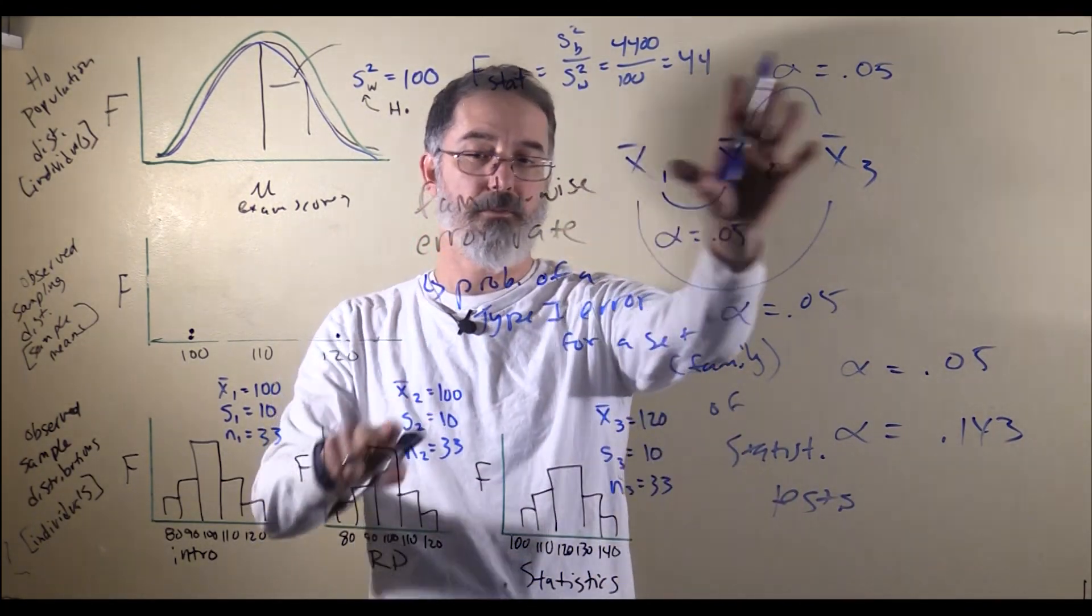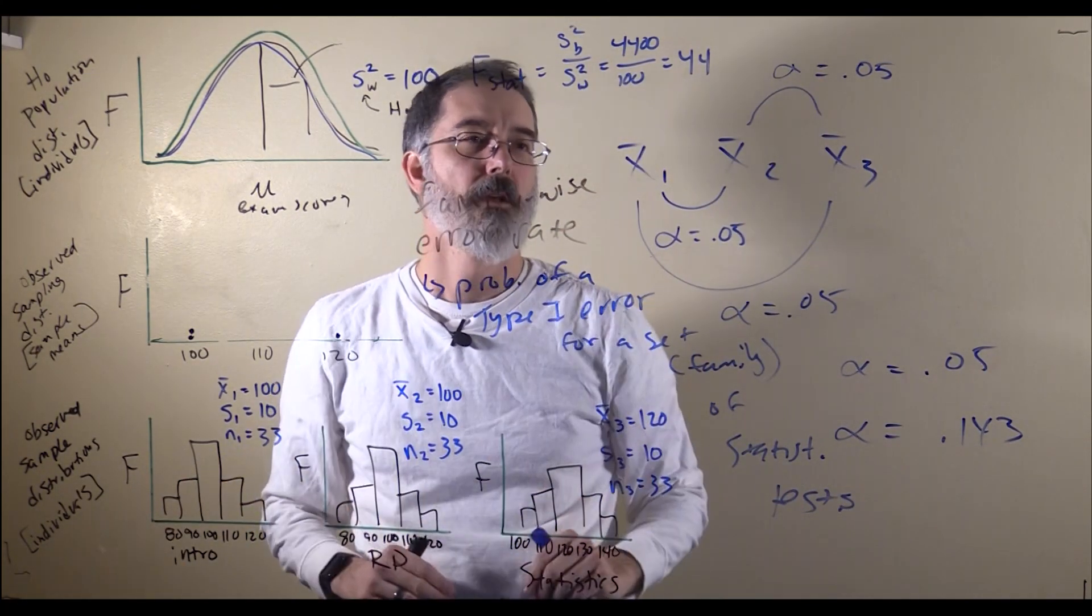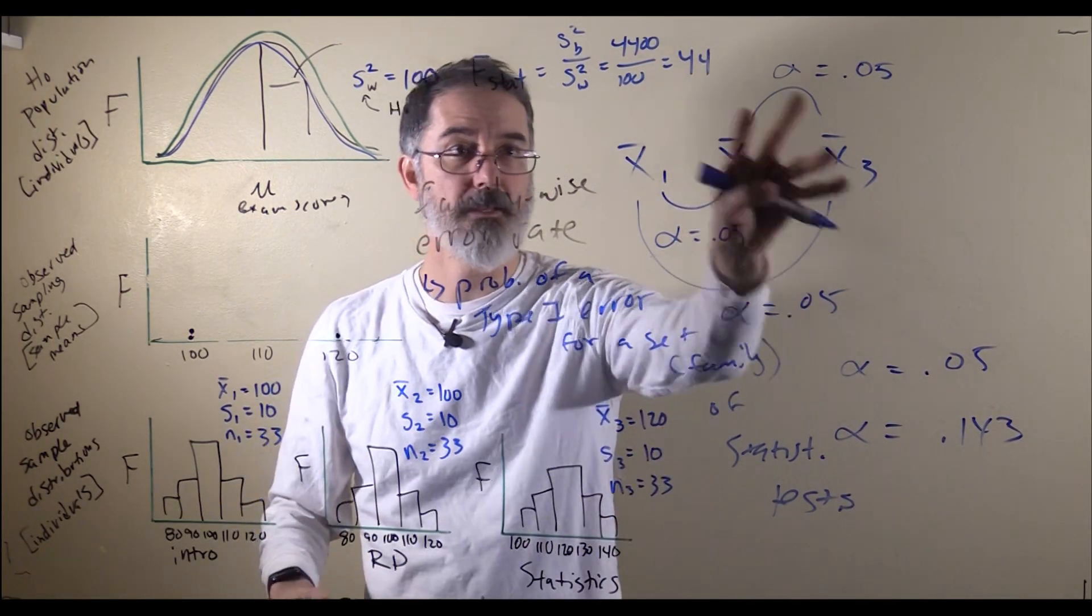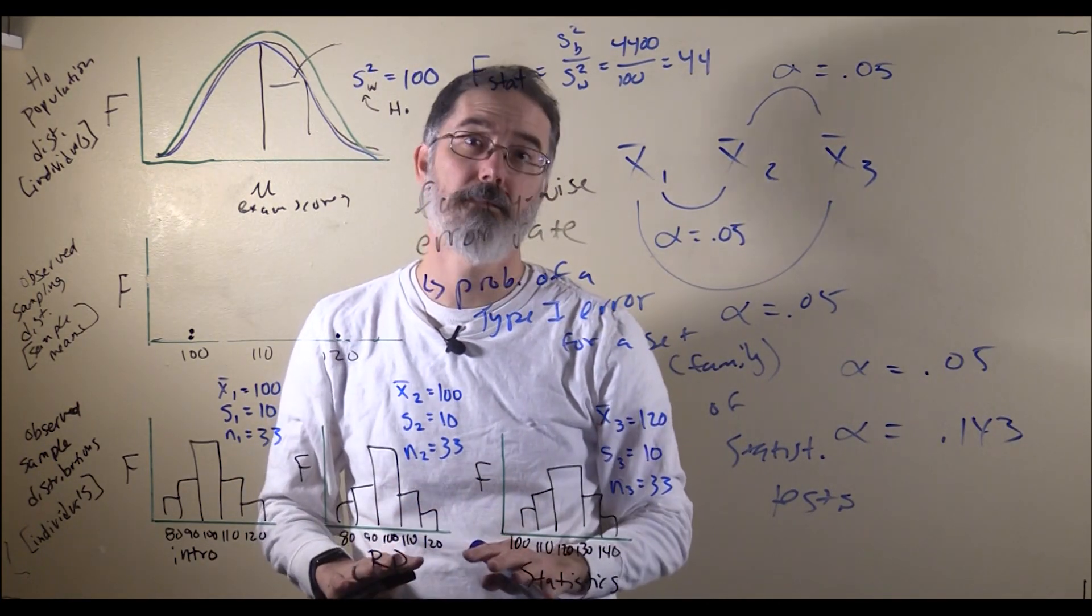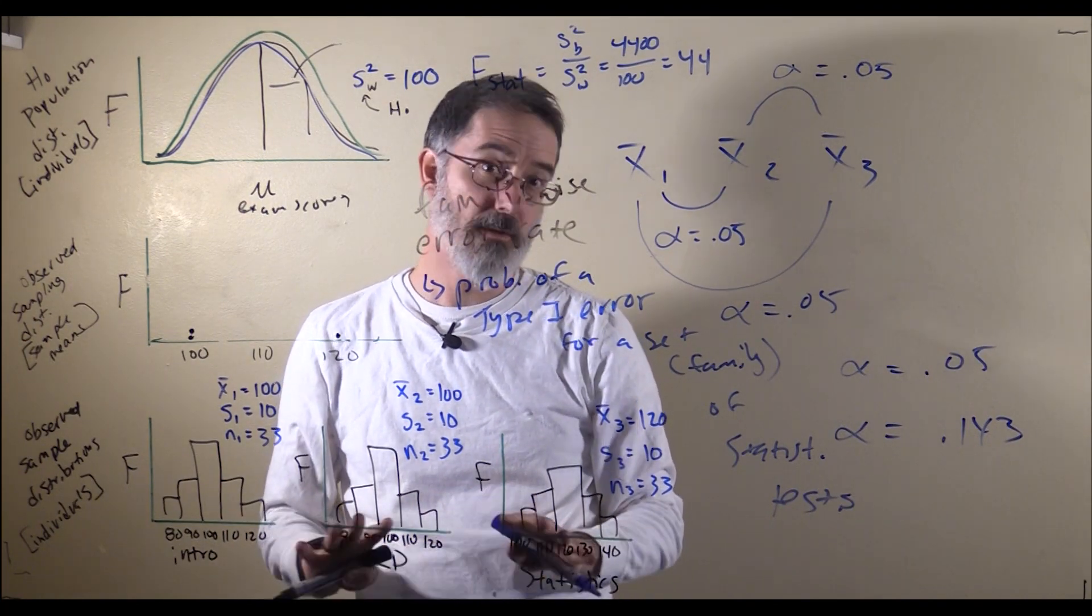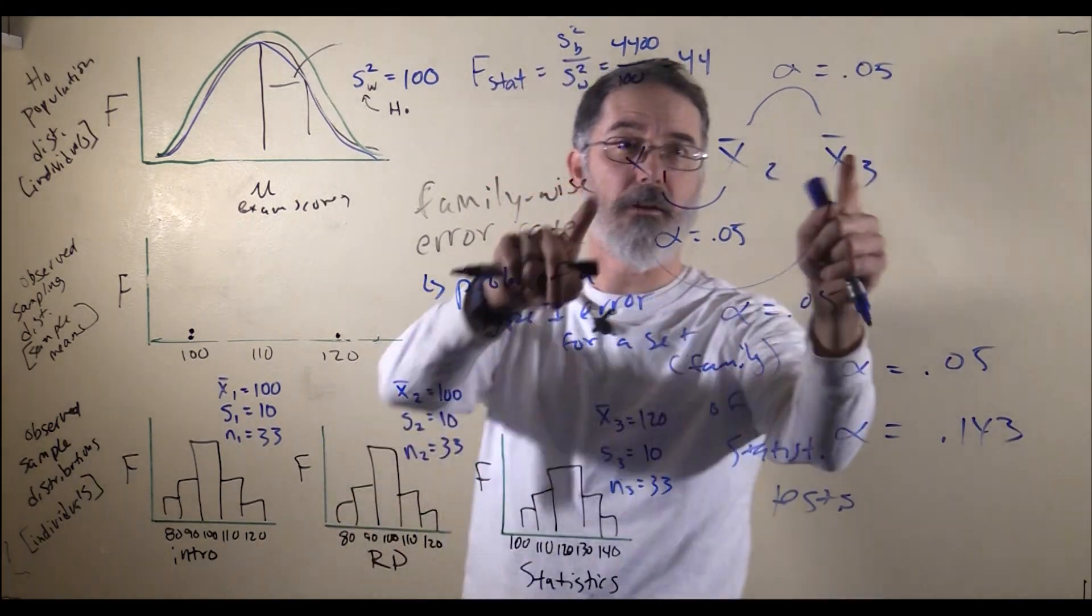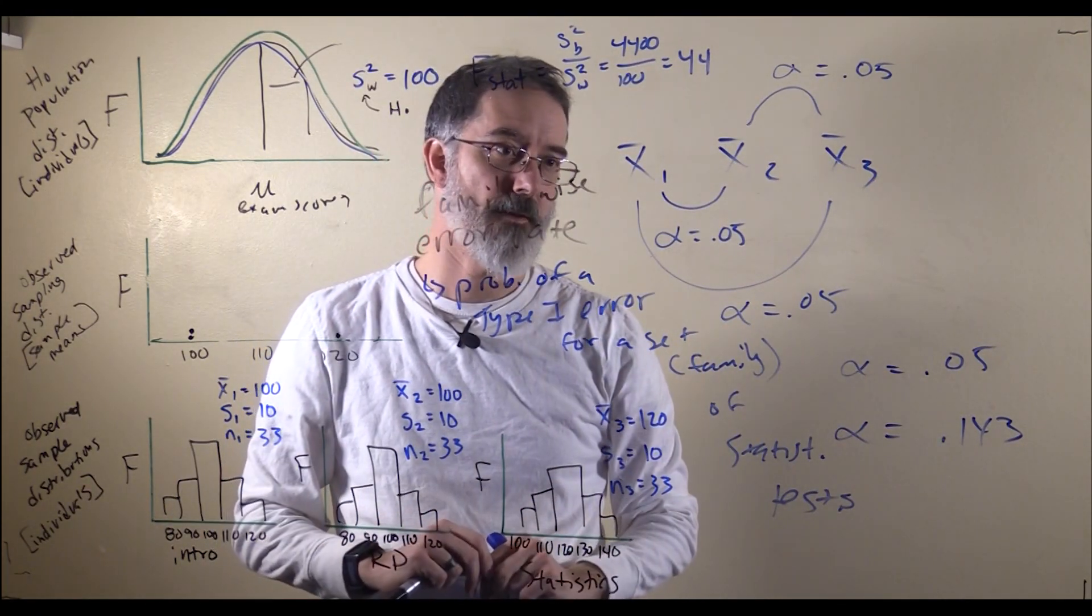This is why when we are comparing three different means, we do an ANOVA first, rather than doing three t-tests. Because as you will see in a little bit, the post-hoc test is actually basically doing three different t-tests, comparing each of these pair-wise. It is slightly modified though.